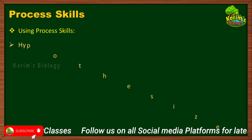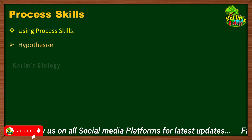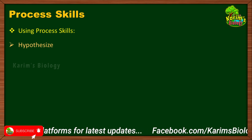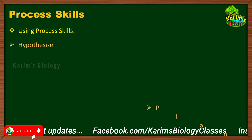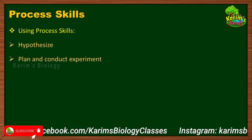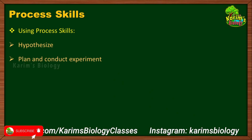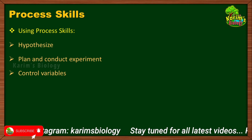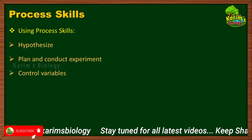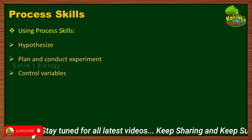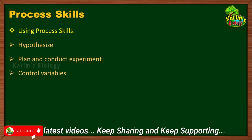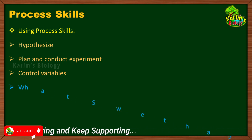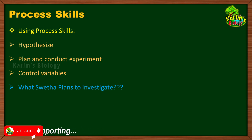First, let us discuss about process skills. There are another set of process skills that we can use while conducting any experiment. The first step is hypothesis, the second step is plan and conduct experiment, and the third step is controlling the variables. This is what we are going to focus upon, and we will discuss this with the help of a small example.